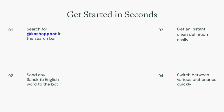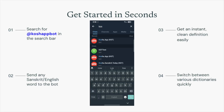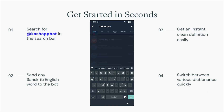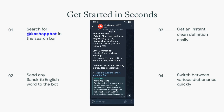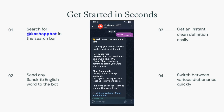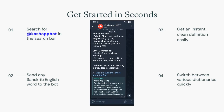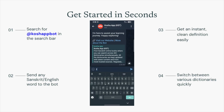Now let us see it in action. We can get started in seconds. Open your Telegram app. Search for at Kausha app bot in the search bar. Select Kausha app KST. Click on Start. You can then send any Sanskrit or English word to the bot by typing, just as you type in a regular chat.